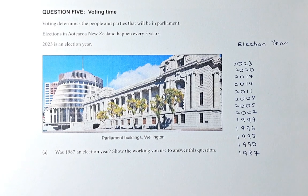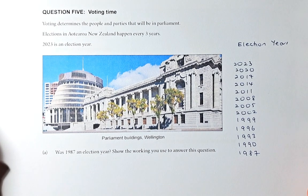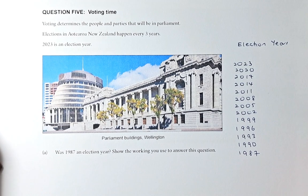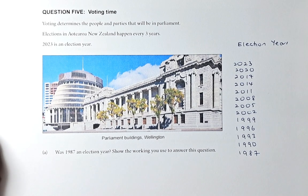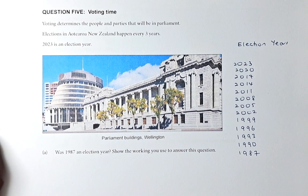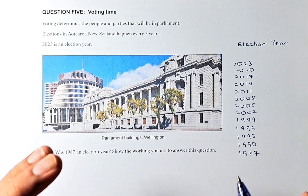Question 5A sounds like this: voting determines the people and parties that will be in parliament. Elections in Aotearoa New Zealand happen every three years. 2023 is an election year. Was 1987 an election year? There are many ways to do this.